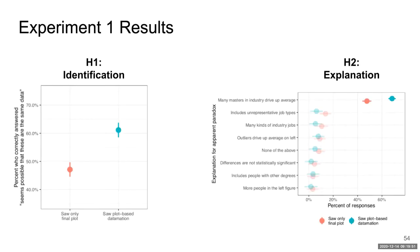These are the results from the first experiment. As you can see, more than 60% of participants who saw the datamation were able to identify the paradox correctly, compared to around 47% of participants who only saw the static image.